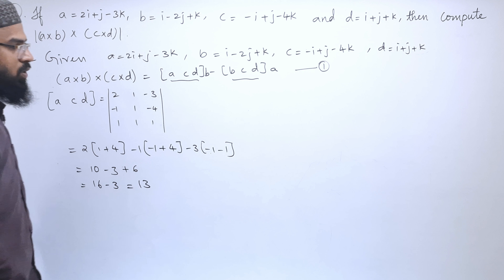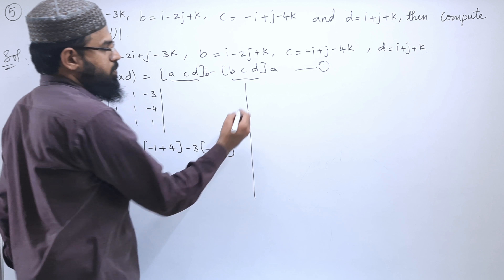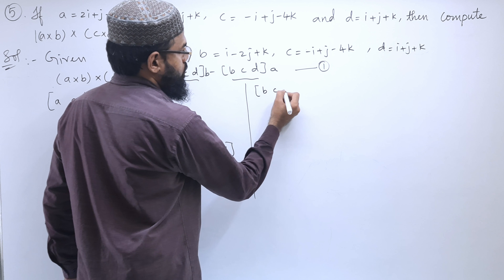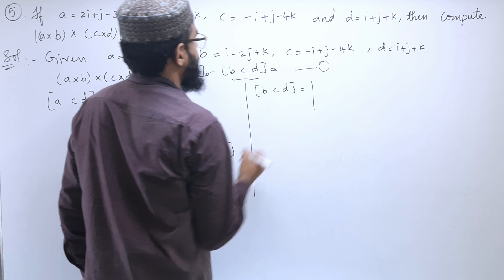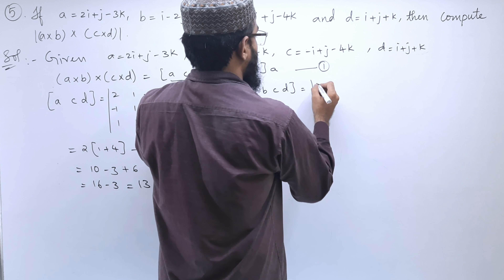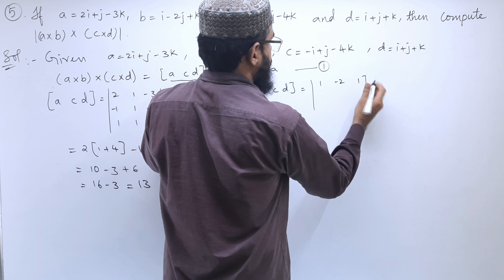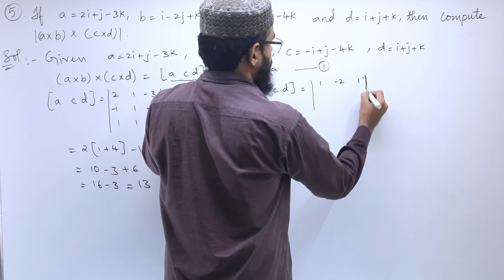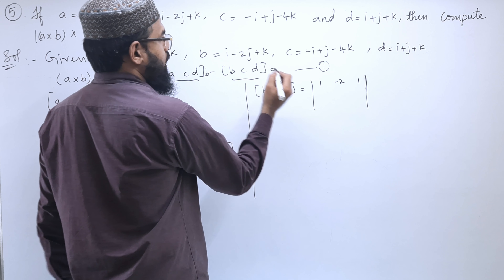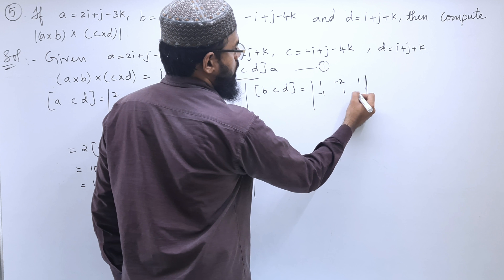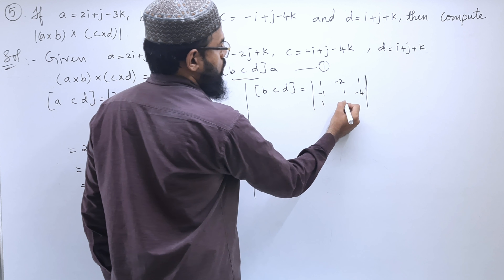Next, we will find out the box product [B, C, D]. Setting up the determinant with B = (1, −2, 1), C = (−1, 1, −4), and D = (1, 1, 1).